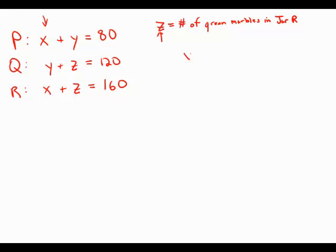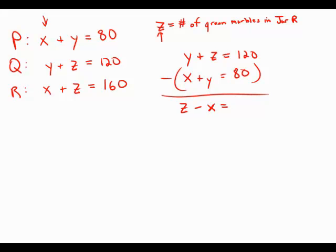I'm going to take the first two, I'm going to take the middle one, y plus z equals 120, and I'm going to subtract from it x plus y equals 80. So subtract this equation, I get z minus x, the y's cancel, z minus x equals 40.